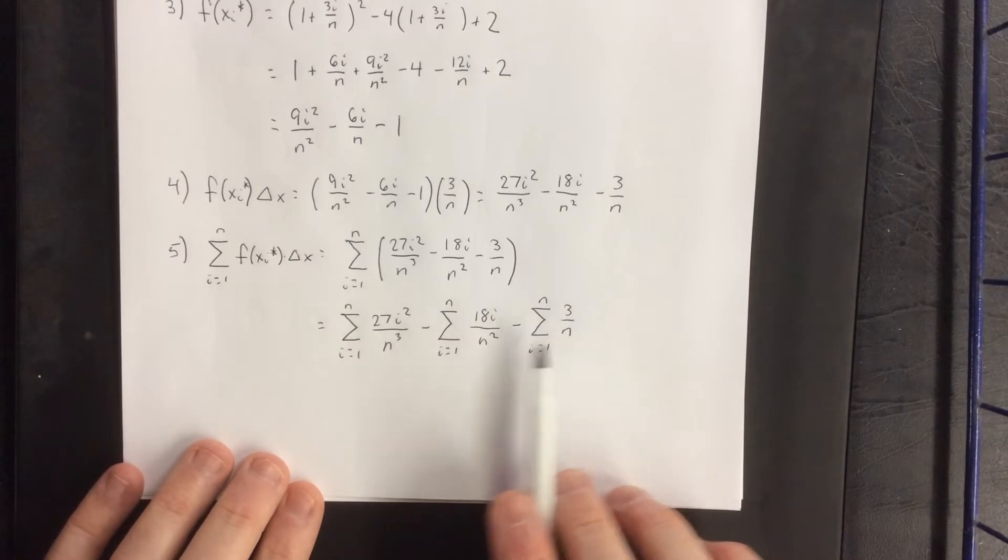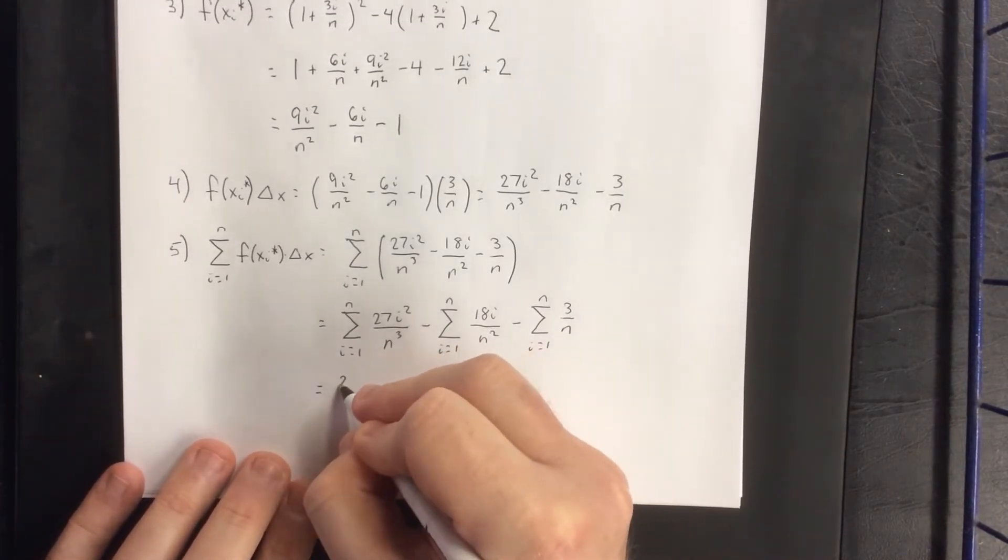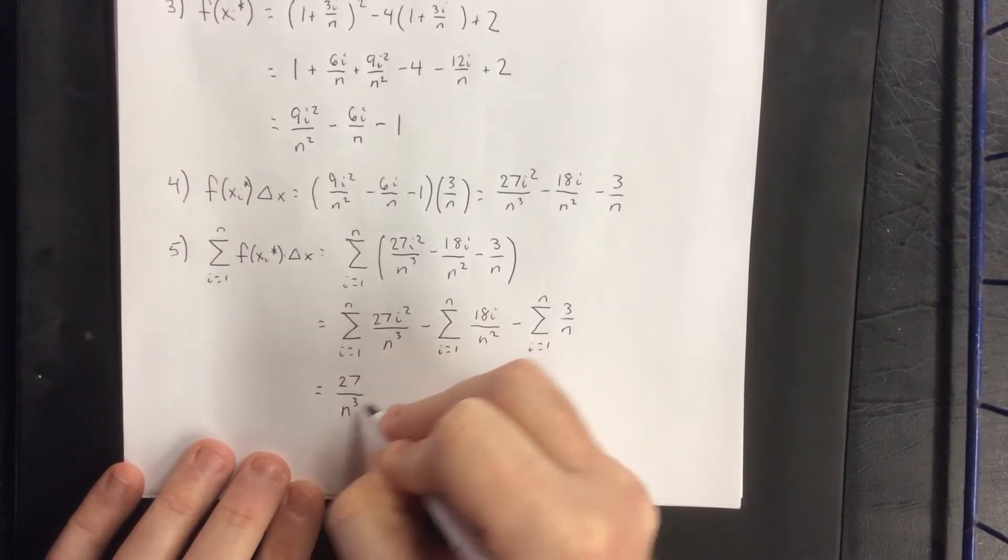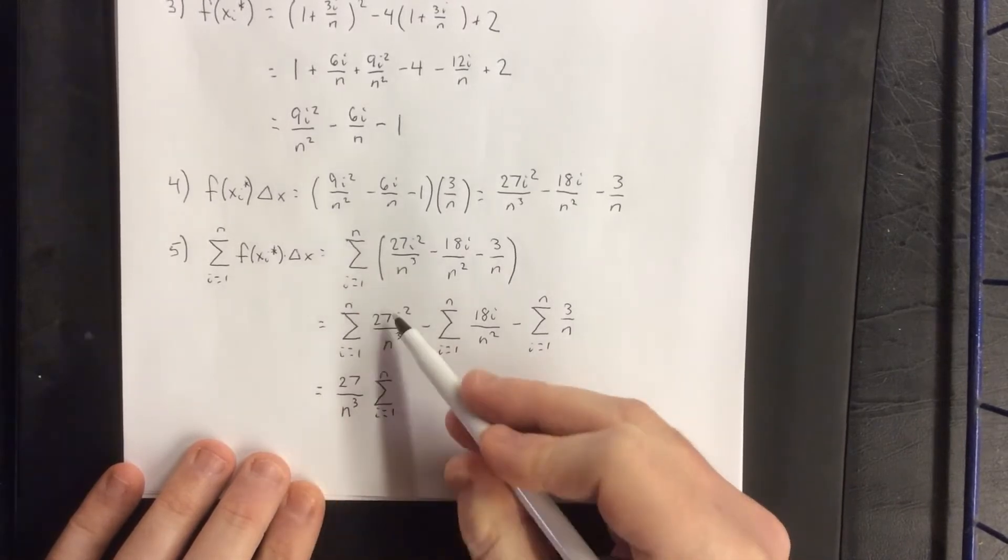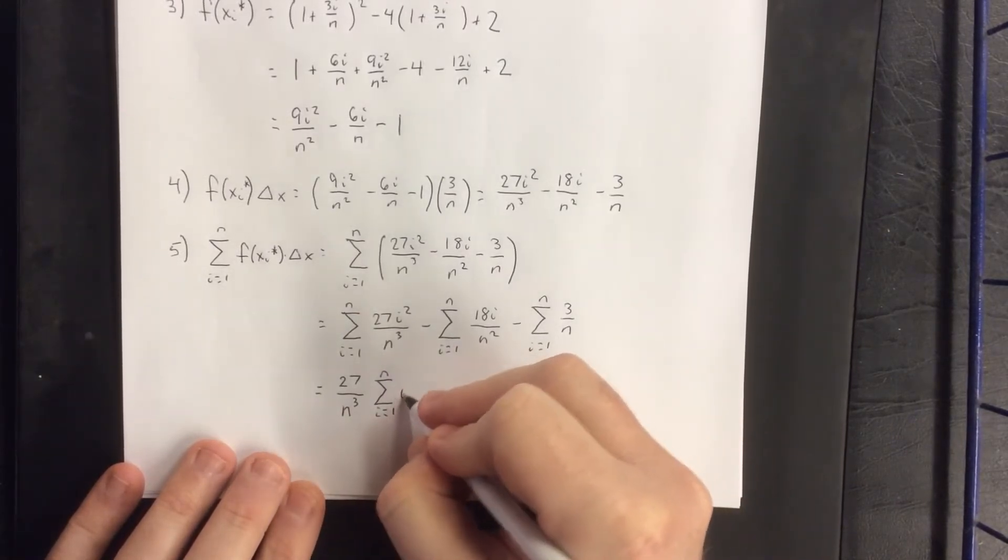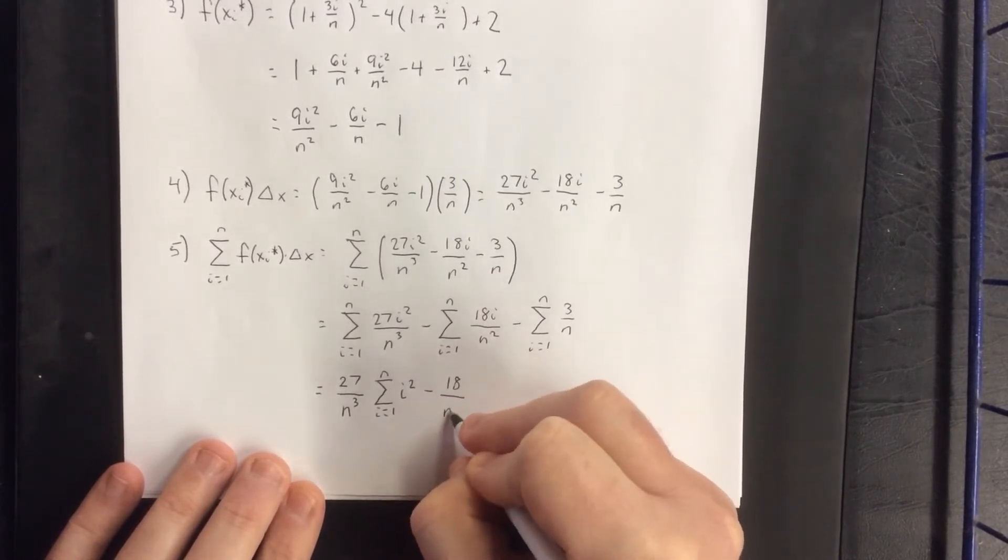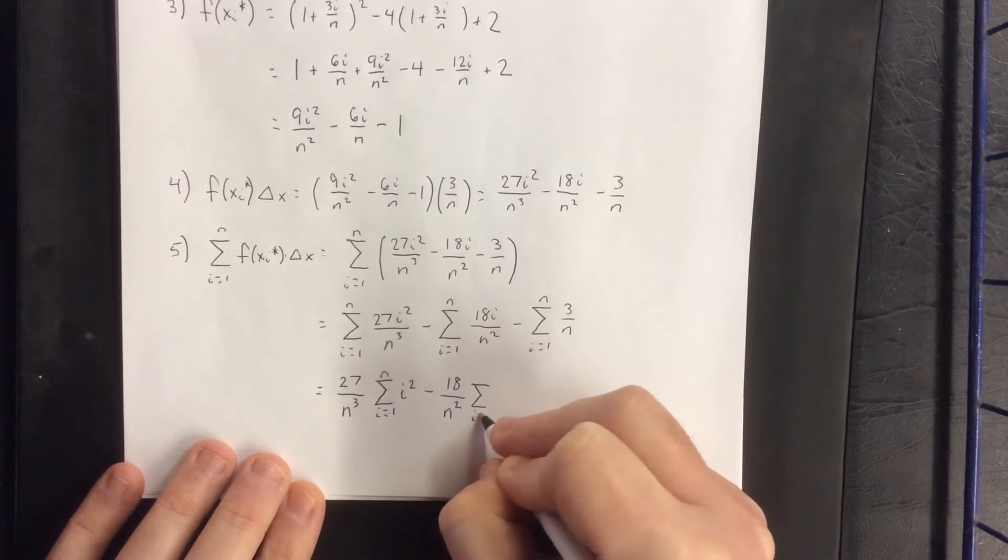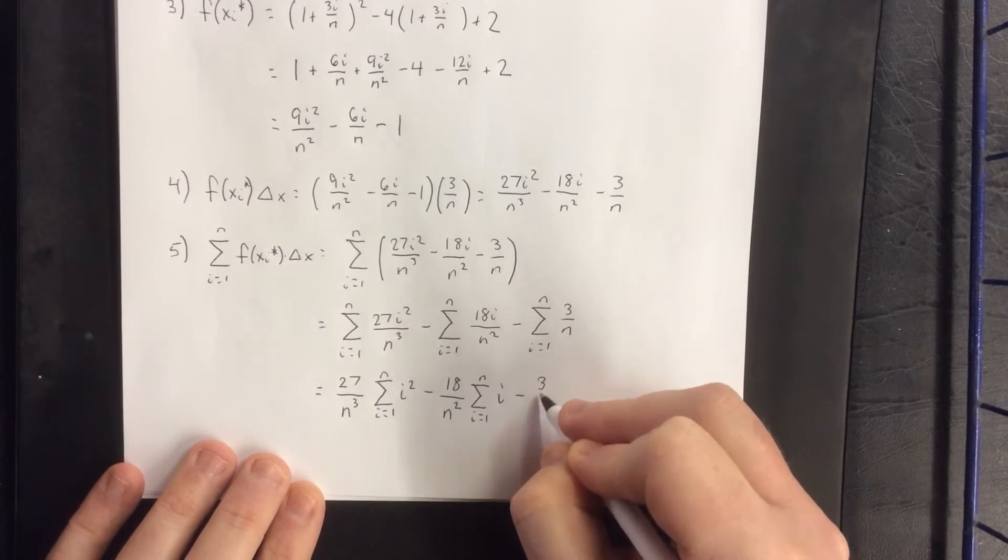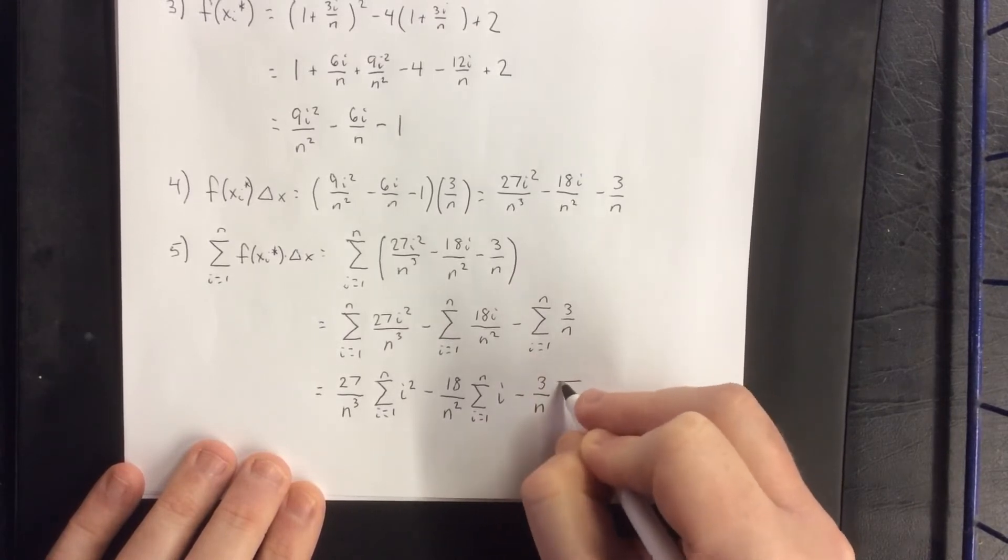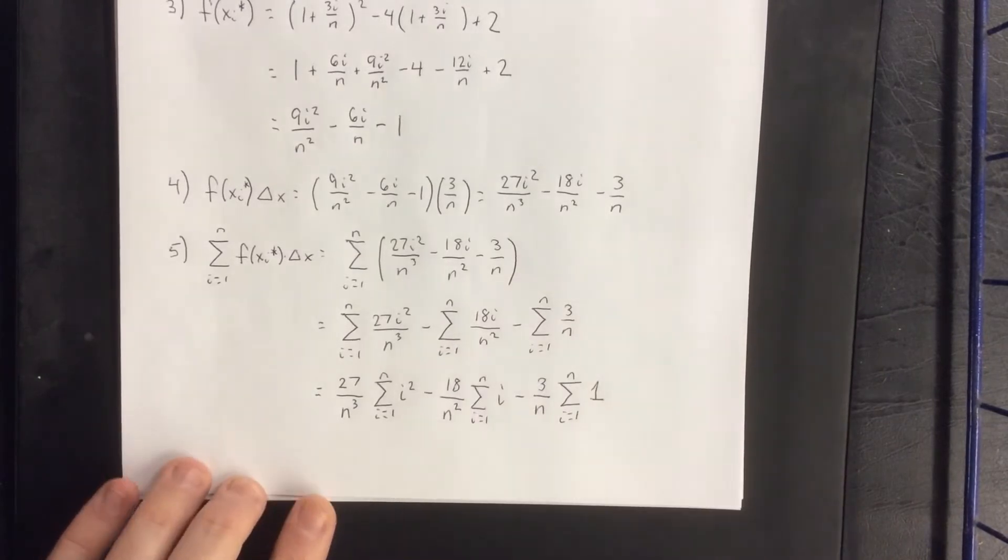Wherever these have constant multiples, the constant multiple can be pulled outside of the summation. In the first summation, anything that is not in i is perceived as a constant multiple. So I can pull out the 27 over n cubed, leaving my summation as simply i squared. From the second summation, 18 over n squared can be pulled out, leaving me with just i. And for the last summation, 3 over n counts as a constant, and if I were to factor that out, that would leave me with the summation of 1.